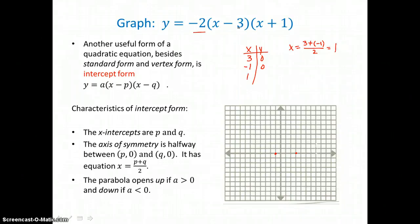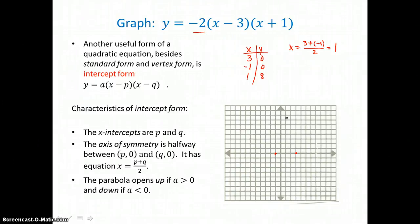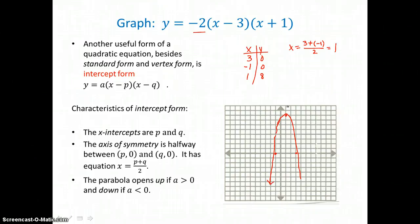I get 2 over 2, or 1, for the x-coordinate of the vertex. Then I substitute that into the equation to solve for y. 1 minus 3 is negative 2; 1 plus 1 is 2, so I have negative 2 times positive 2, that's negative 4. Negative 4 times negative 2 is positive 8. So the vertex is at (1, 8). I can now draw the parabola opening down through those points, and locate the axis of symmetry — the vertical line x equals 1.